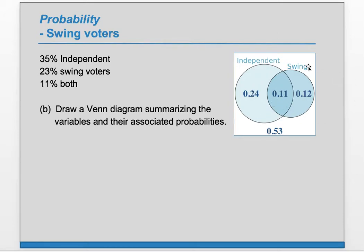Similarly, if the swing circle has to add up to 23% and there's 11% in the overlap, there must be 12% in the swing-only section. Not all the probability is located inside the circles, so you can also think about what's outside. This 53% is what's outside these circles.